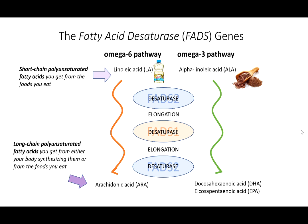You can also get the long-chain PUFAs from your diet. So you get the long-chain in two ways: from the food you eat, and from your body's ability to synthesize them from the short-chain PUFAs that you eat. As you can see, variation in diet could lead to variation in the PUFAs that a person has available in their body — short-chain versus long-chain and omega-6 versus omega-3.